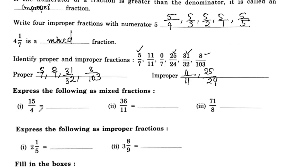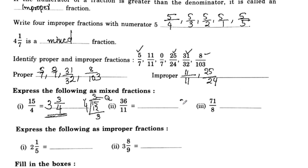Express the following as a mixed fraction. 15 by 4: we divide 15 by 4. 4 times 3 is 12, remainder is 3. So the quotient is 3, remainder is 3, and divisor is 4 — giving the mixed fraction 3 and 3 by 4. Next, the quotient is 3, remainder is 3, divisor is 11, giving 3 and 3 by 11.